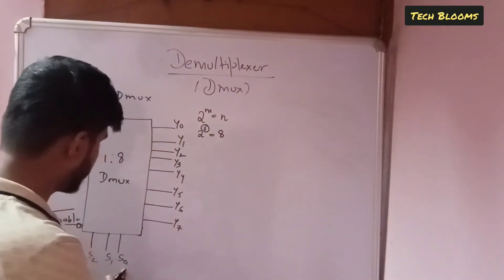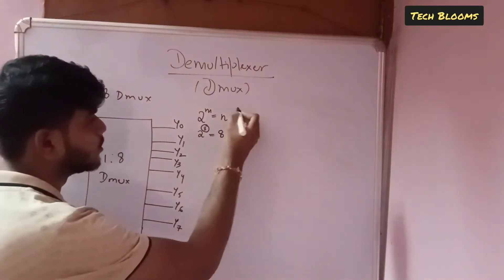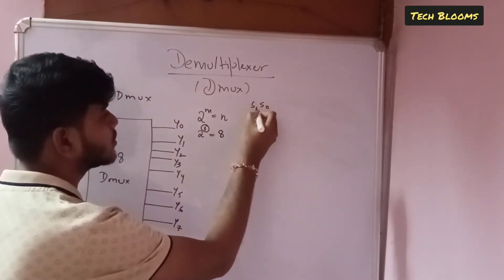Now how to derive the truth table. Now what are the inputs? S0, S1, S2 are the inputs. So we will have S0, S1, S2